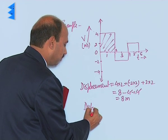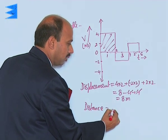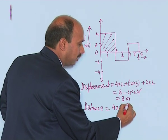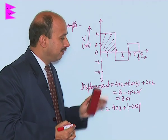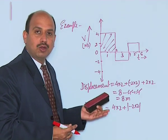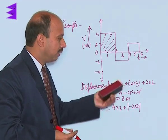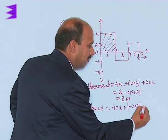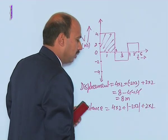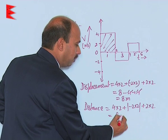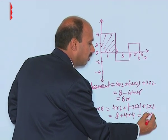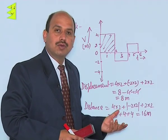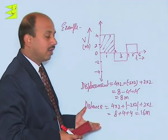Distance is equal to, this is 4 into 2 plus, here we will write magnitude of this. Everything is same because speed cannot be negative, so that has to be positive. So we have taken magnitude plus 2 into 2. You will be getting 8 plus 4 plus 4, that is 16 meter. So using this graph, you can calculate the distance and displacement.